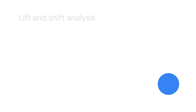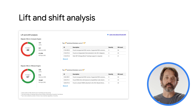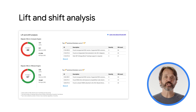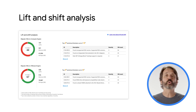Now, let's dive deeper into what these journeys mean. In this section of the report, you can see the lift and shift journeys and the top technical blockers for each of them. The two lift and shift journeys are migrating VMs to Google Compute Engine and migrating VMs to Google Cloud VMware Engine, or GCVE.